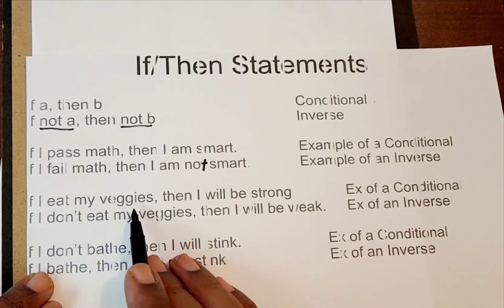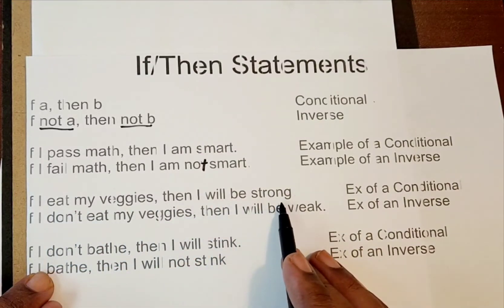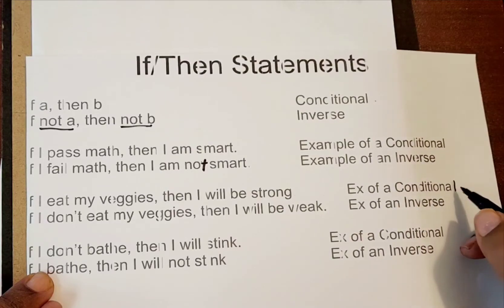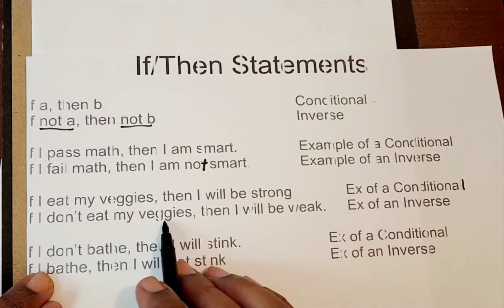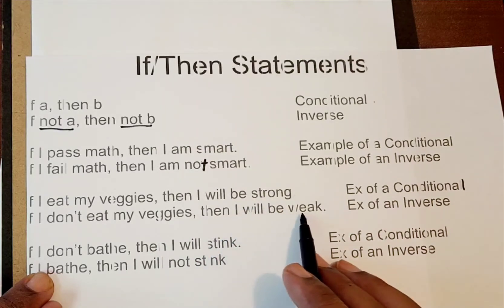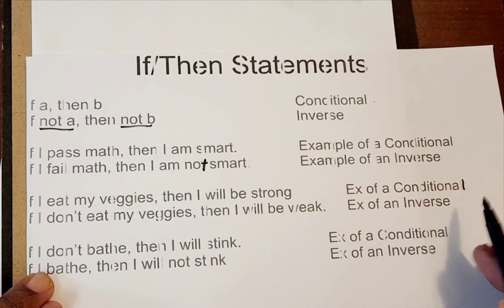Next, if I eat my vegetables, then I will be strong. Okay, well, that's the conditional. So, if I don't eat my vegetables, and the opposite of strong is weak, then I will be weak. So, I got opposite here and opposite here. And so, that's the inverse.